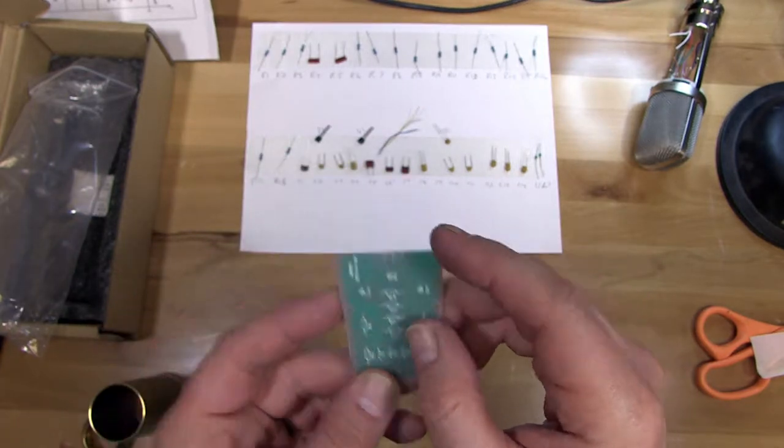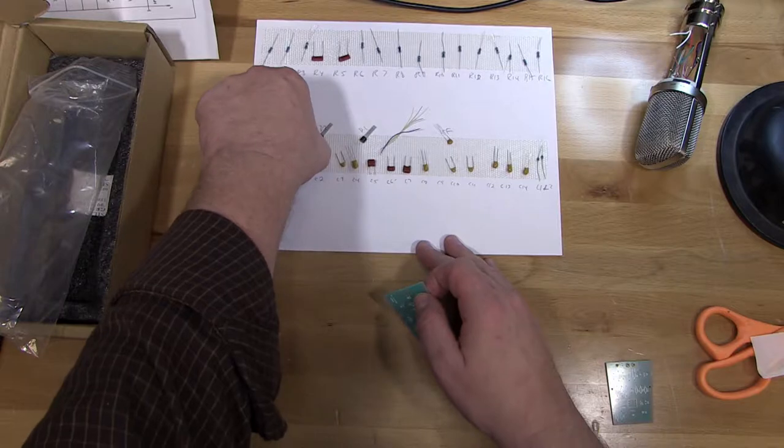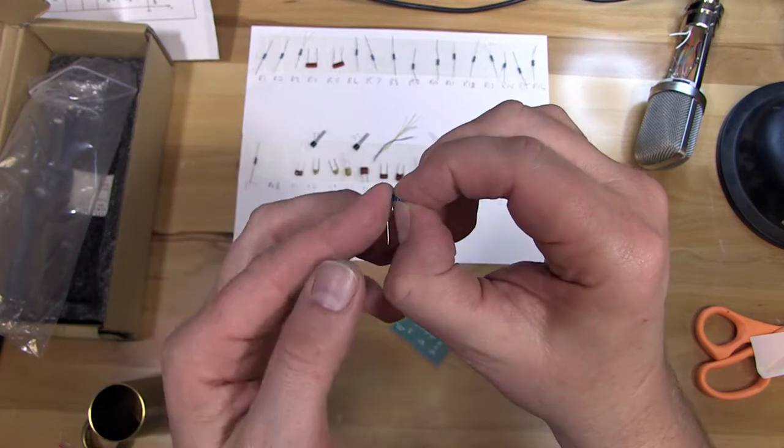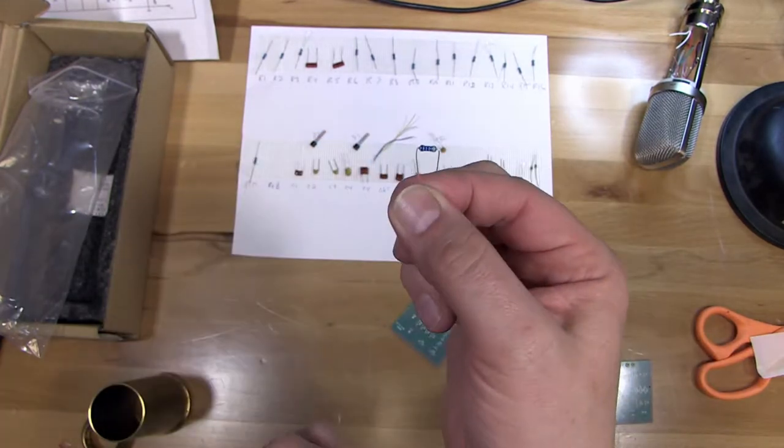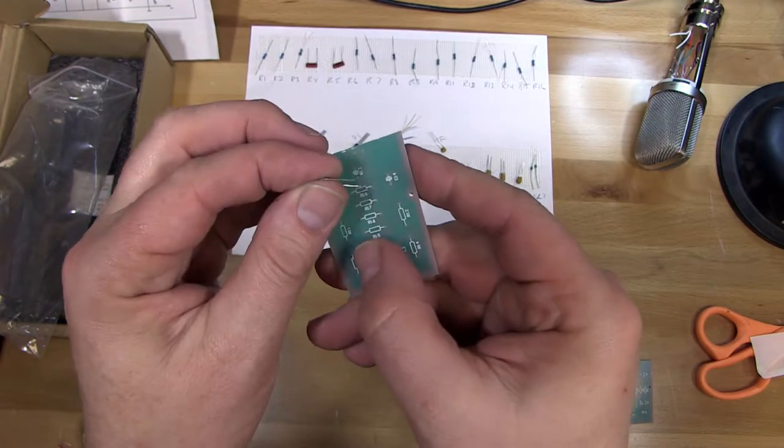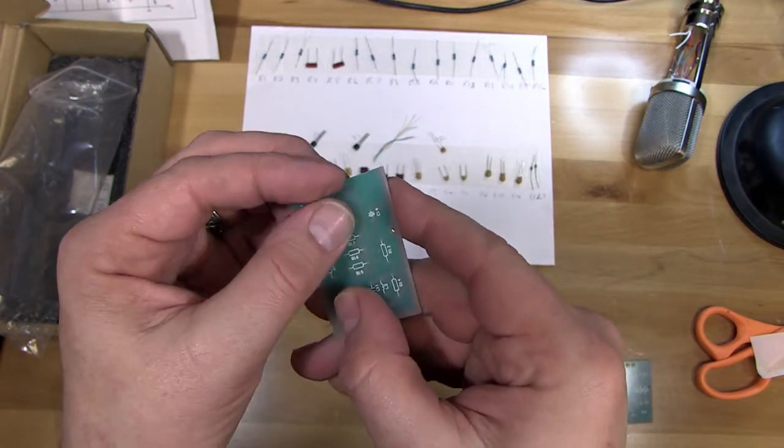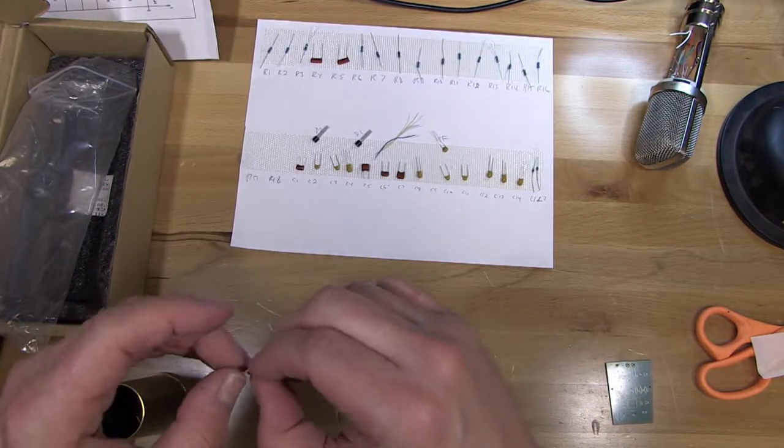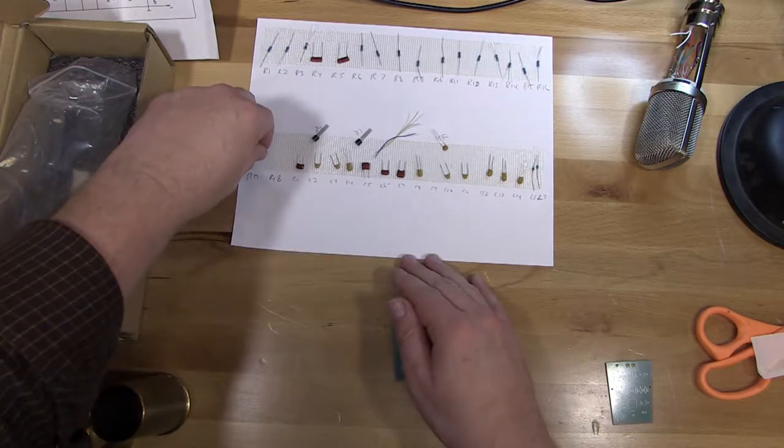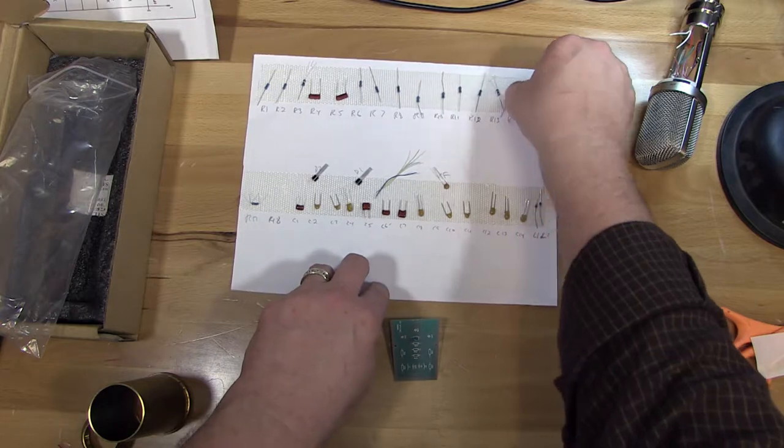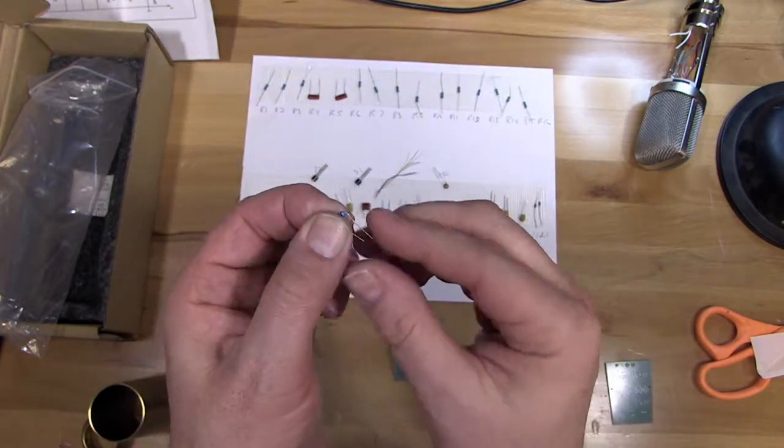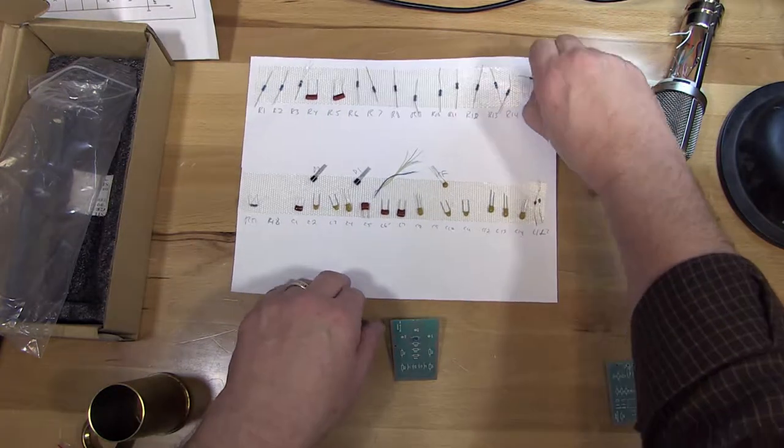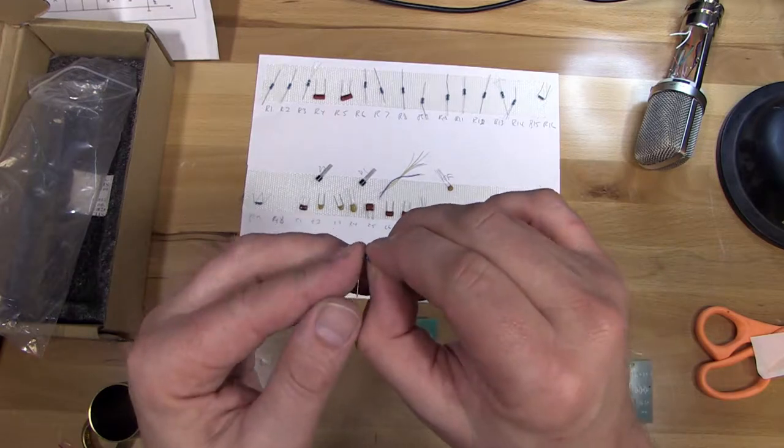First resistor is R18. So I'll grab that. And bend the leads just to the sides of the resistor. Put it in place. So I'm going to go ahead and bend all of those resistors and put them back in their spots. So here's R17. So I'm just making it so that everything is sort of set up almost assembly line, so it's ready to go when I'm ready to do the next step.